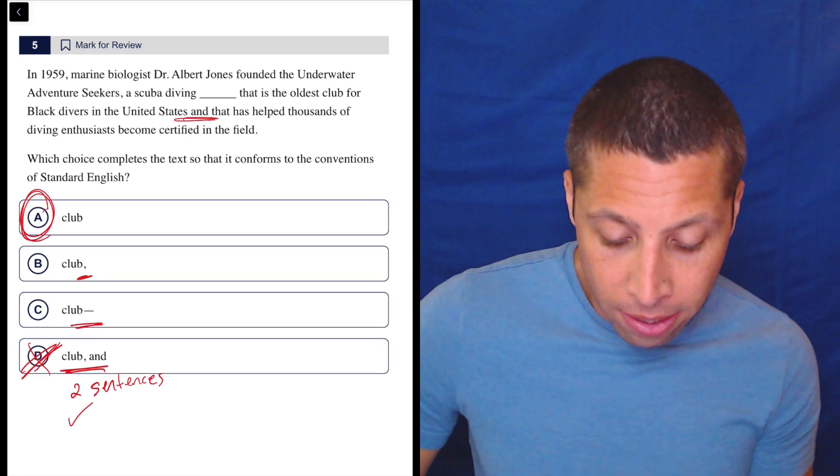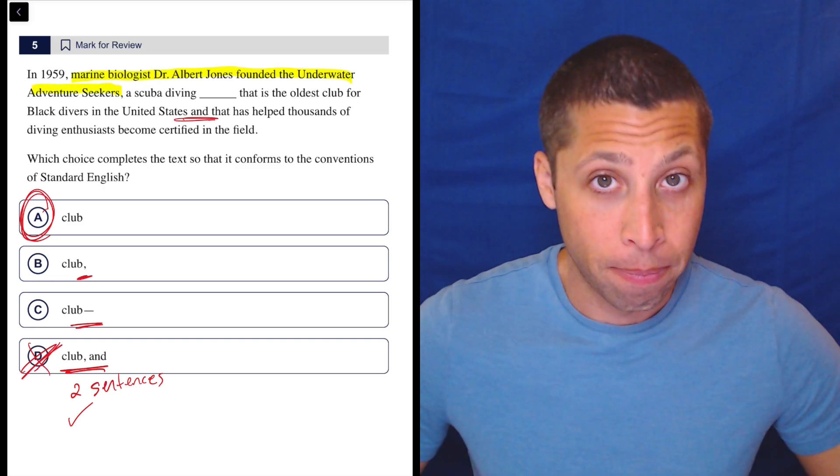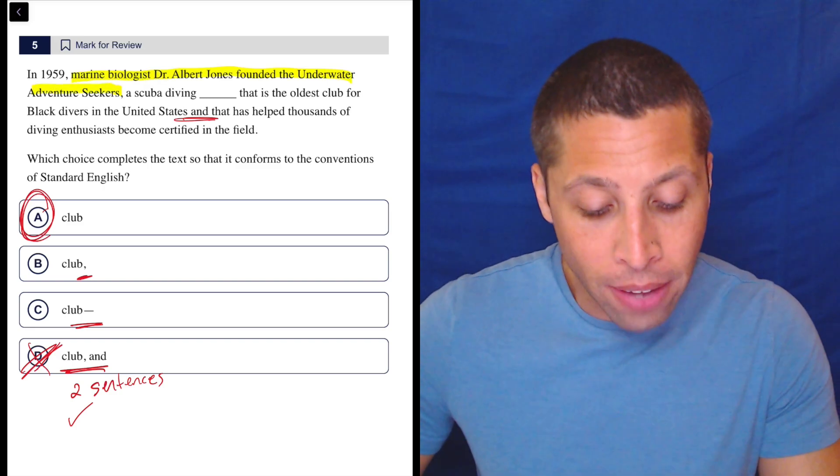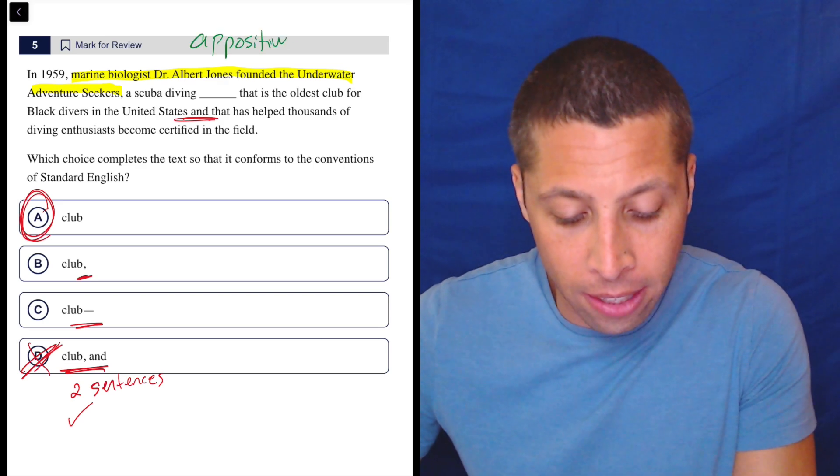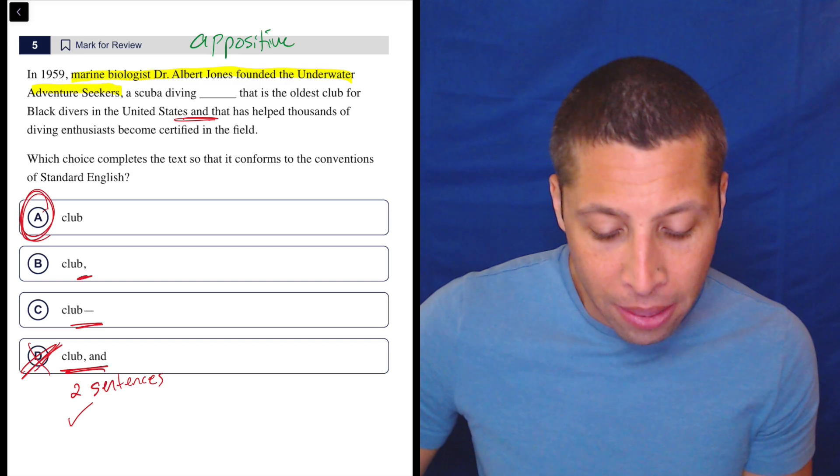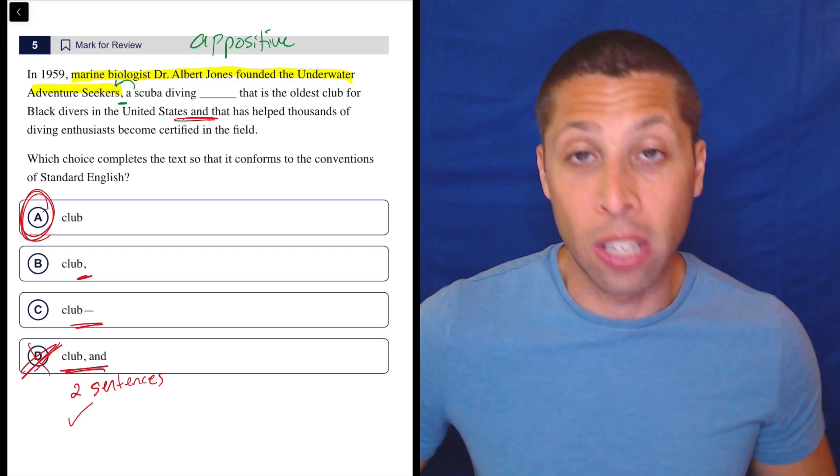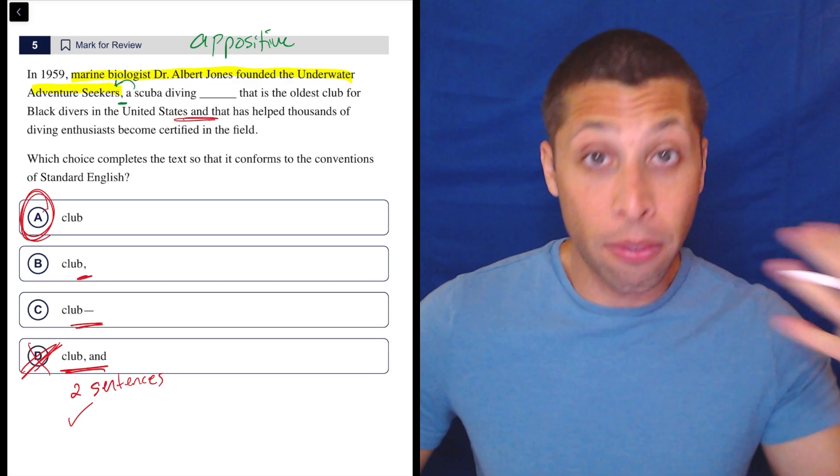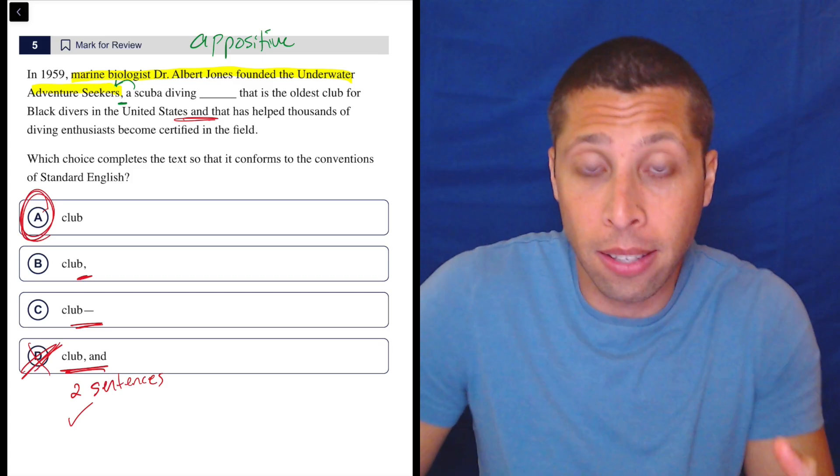Here's what's happening. This is our sentence, okay? And it ends there with that comma. Then we have an appositive. Now, we've seen these tested in other questions in much more obvious ways, but this comma is allowing me to define the Adventure Seekers, right? So basically, we have a very long definition of this thing. It's longer than the main sentence itself.